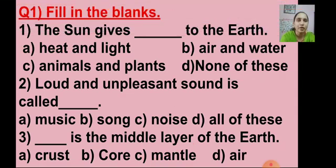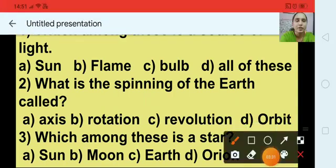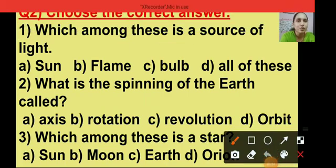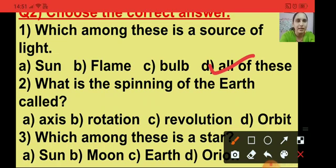Question number 2, choose the correct answer. Here 4 options are there for each question and you have to choose the right answer. Question number 1: which among these is a source of light? The options are sun, flame, bulb and all of these. The right answer is all of these, so I am putting a tick on option D. Sun, flame and bulb are the sources of light.